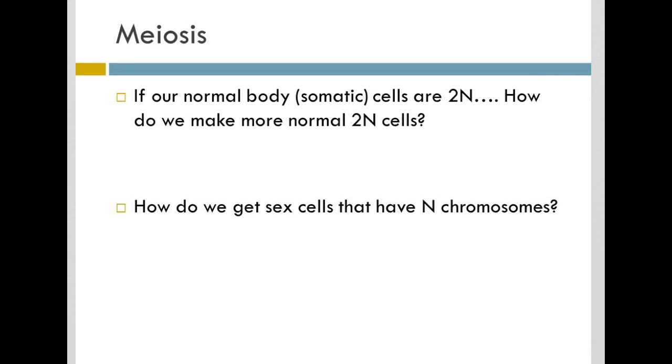So our normal body cells, which we also call somatic cells, are 2n, diploid. How do we possibly make more 2n cells? We do that through mitosis, which we studied in the past. Again, mitosis, we created identical daughter cells. And so we went from 2n to 2n. Chromosome number stayed the same. Everything stayed the same. That was mitosis.